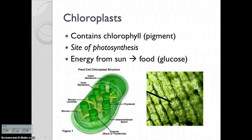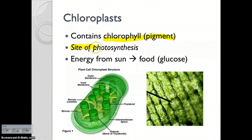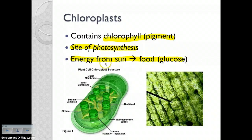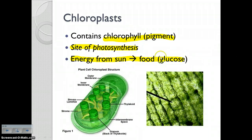Next up we have chloroplasts. These are full of that green stuff called chlorophyll, and that is where photosynthesis happens. The function of the chloroplast is the site of photosynthesis. Here is the overall process: we use energy from the sun and we use it to make food for the plant — that's glucose, sugars. That is the big picture of what is happening inside the chloroplasts during photosynthesis: energy from the sun used to make food for the plant.